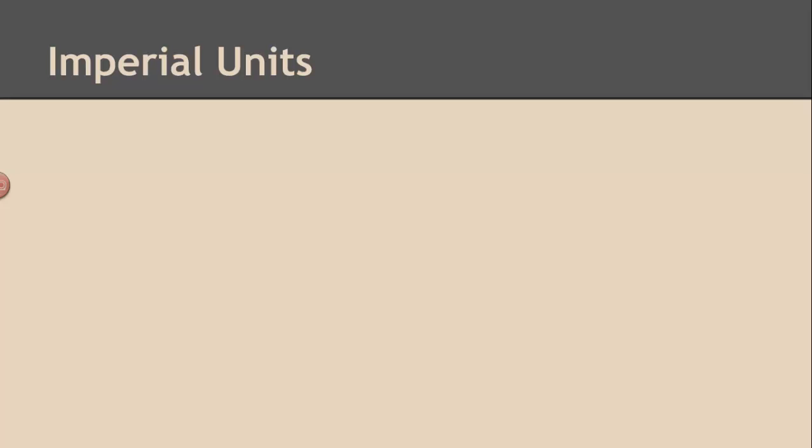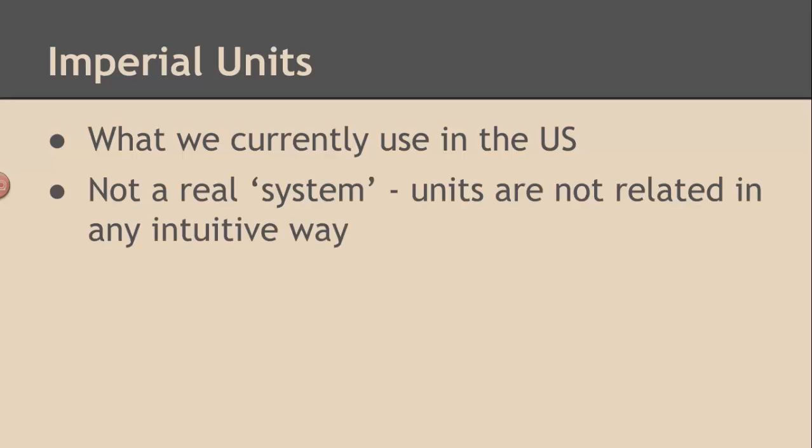What we use are called imperial units. And the imperial units are very old, and they're not really a real system. The units aren't really related in any intuitive way. For example, there are 12 inches in a foot. There are 3 feet in a yard, or 5,280 feet in a mile.